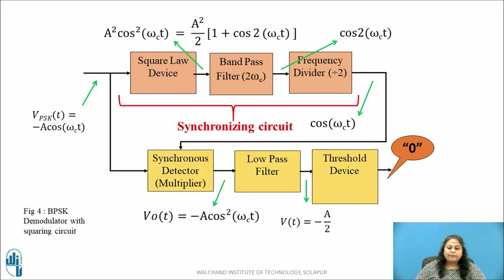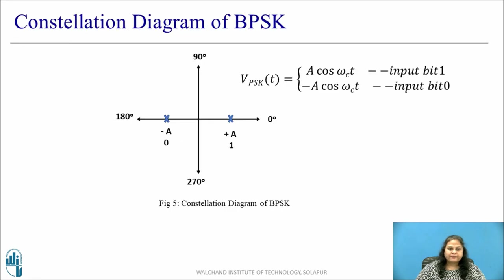Its major disadvantage is that it needs a complex synchronizing circuit. The figure shows the constellation diagram of the BPSK signal. It can be seen that the BPSK signal is represented by two signals with amplitude A and phase angles of 0 degrees and 180 degrees for bit 1 and 0 respectively.